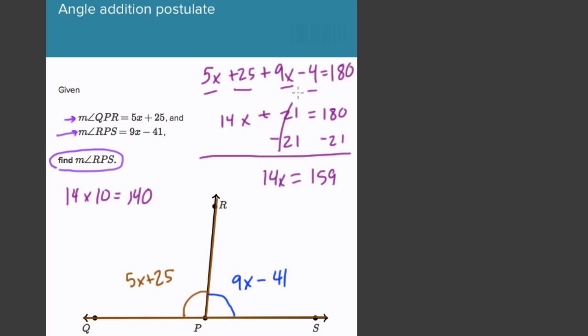Oops, I made a mistake. Look at this. Sorry, 9x minus 41, not 4. That'll help us here. So going back, oh boy. That's a big mistake here.